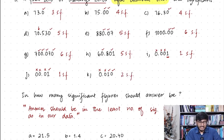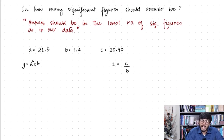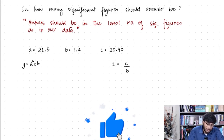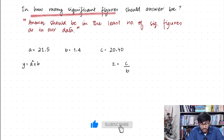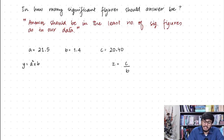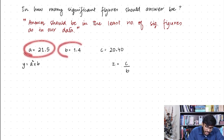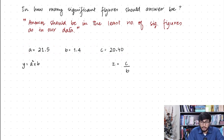So I hope this exercise gives you a clear idea of whether a zero is going to be significant or not. Now let's move on to the rule for how many significant figures to give in your answer. The rule is simple: your answer should be given to the least number of significant figures present in the data.